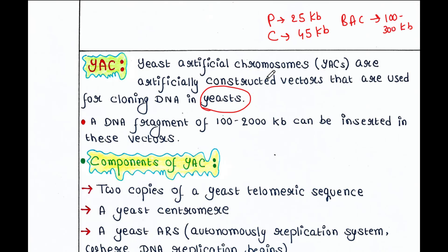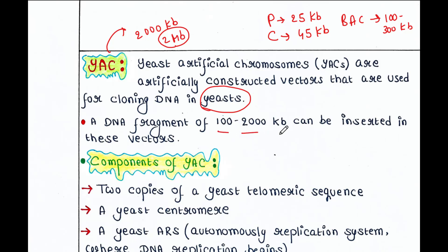But in case of YAC, this is the largest. We can insert up to 200 KB DNA fragment — that is really huge. That's why we use this YAC vector whenever we want to clone such a big fragment. A DNA fragment of 100 to 1000 KB can be inserted in these vectors.